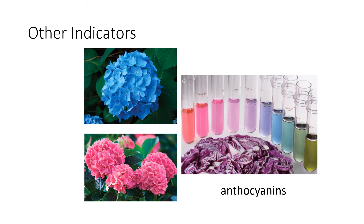Many other chemicals can be used as acid-base indicators beyond litmus. Even tea can be used as one — if you've ever brewed a strong cup of hot tea and squeezed a lemon into it, you'll notice the color lightens quite a bit. There are compounds in tea that go from dark brown to lighter brown once the solution becomes more acidic.